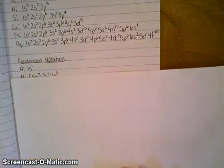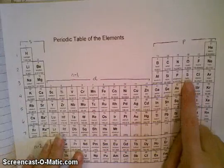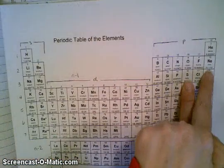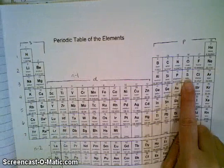So the next element that we did was sulfur, and sulfur is here. So the previous noble gas is neon, so you'll put neon in brackets, and then you'll write everything else down.